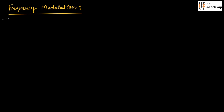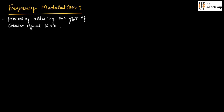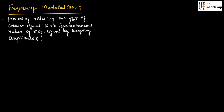Frequency modulation is a process of altering the frequency of the carrier signal with respect to the instantaneous value of the message signal, by keeping the amplitude and phase of the carrier signal constant.